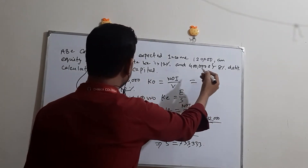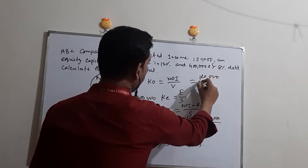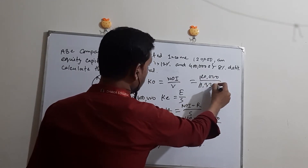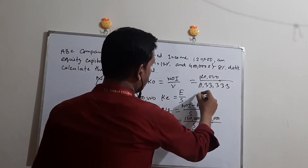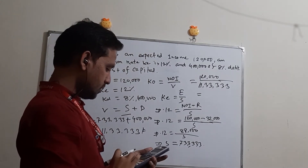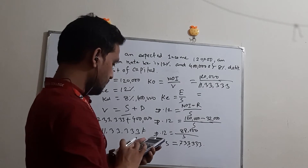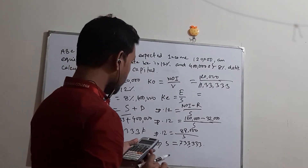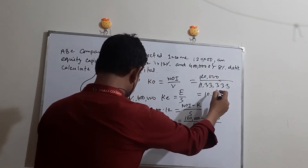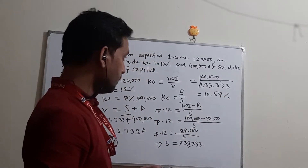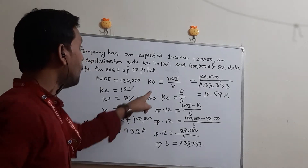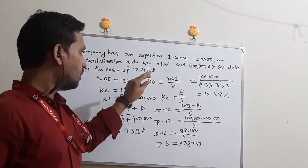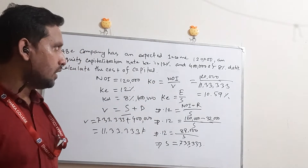Now the overall cost of capital KO = NOI / V = 1,20,000 / 11,33,333 = approximately 10.59%. So the overall cost of capital in Case 1 with 4 lakh debt is 10.59%.